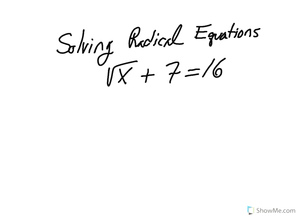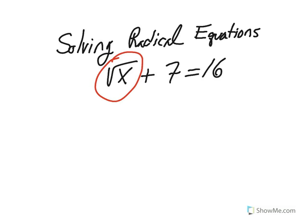So let's take a look at an example. The first thing we want to do is get the square root of x all by itself on one side of the equation. To do that, we need to subtract 7 from both sides using the subtraction property of equality. 16 minus 7 is 9.